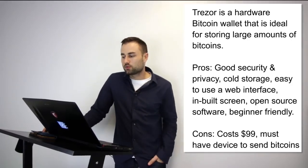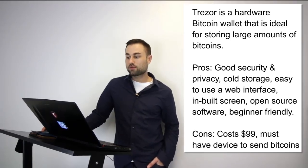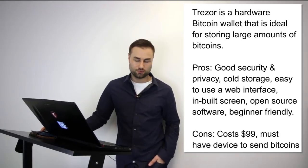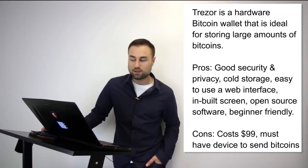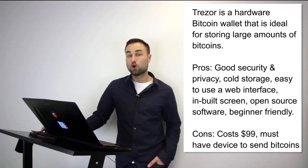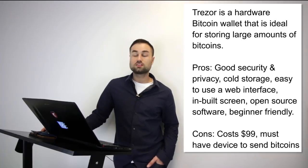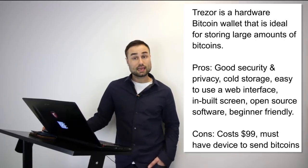Now for the two hard wallets. Number one is the Trezor — a hardware Bitcoin wallet ideal for storing large amounts. Trezor cannot be affected by malware and never exposes your private keys. Pros: excellent security and privacy, cold storage, easy-to-use web interface, built-in screen, open source software, beginner-friendly. Cost is around $100. The downside is you must have the device to send Bitcoin. I think it's an awesome device and I recommend it to most people.